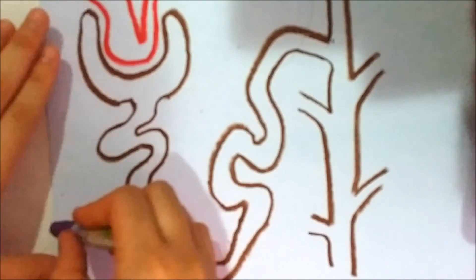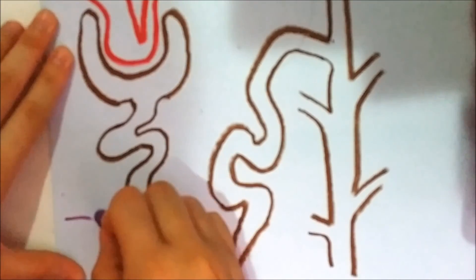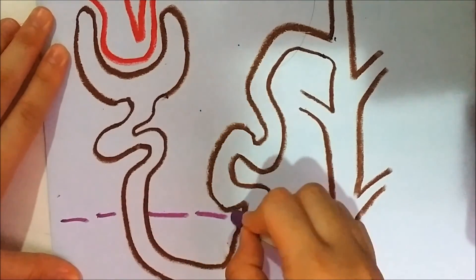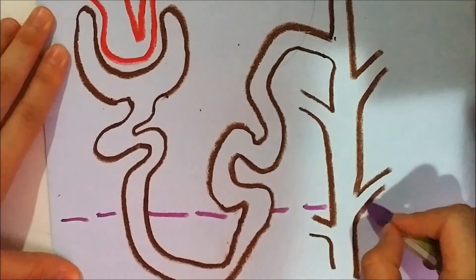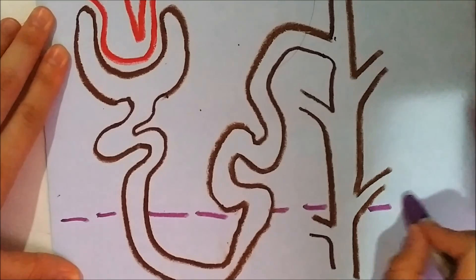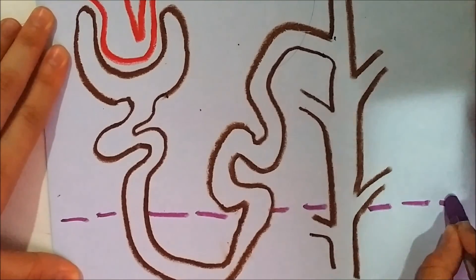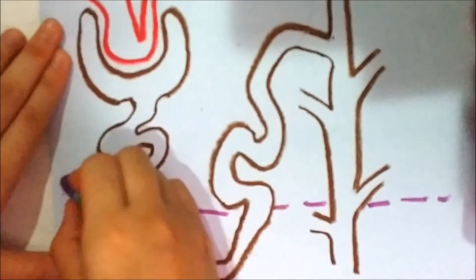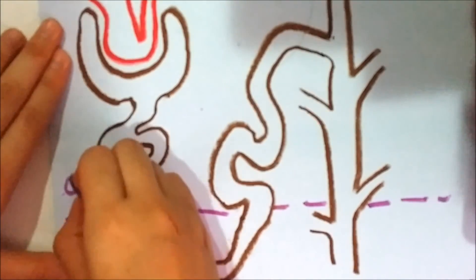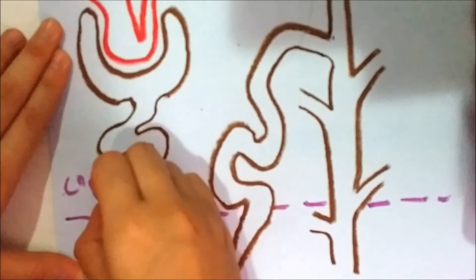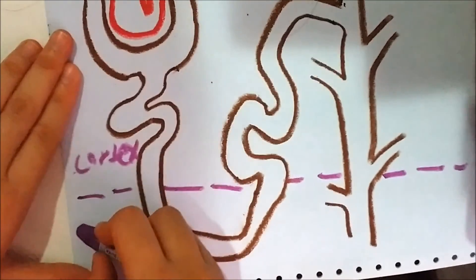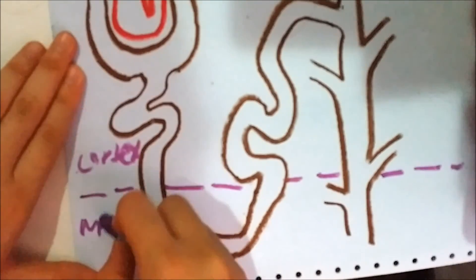Kidney is divided into two parts — one is cortex, one is medulla. The cortex is the outer part of the kidney. This is known as cortex, while this is known as medulla.